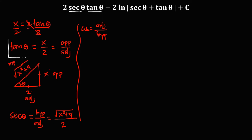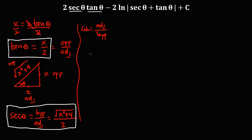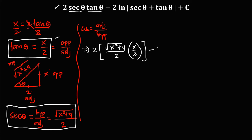Substituting the values for secant theta and tangent theta: we have 2 times secant theta (which is square root of x squared plus 4 over 2) times tangent theta (which is x over 2), minus 2 times ln of the absolute value of secant theta (square root of x squared plus 4 over 2) plus tangent theta (x over 2), plus C.